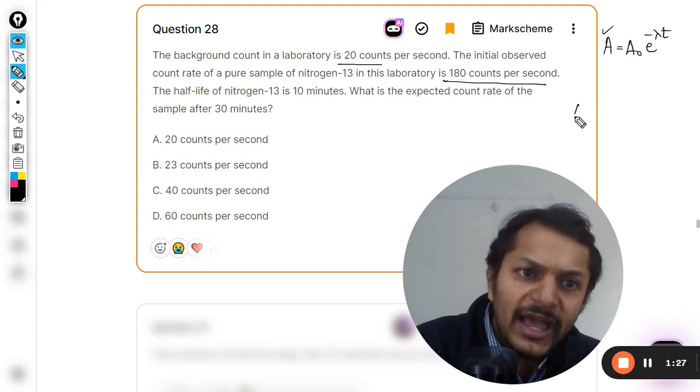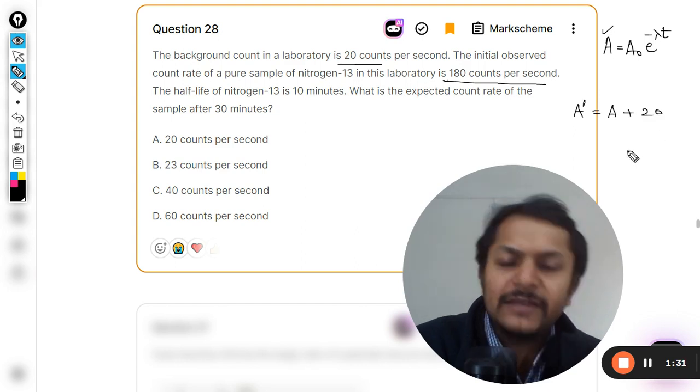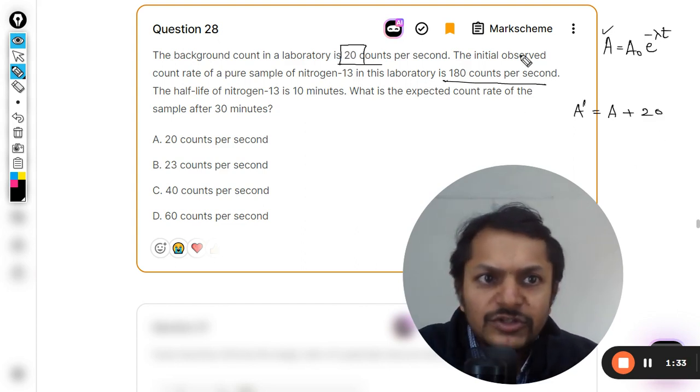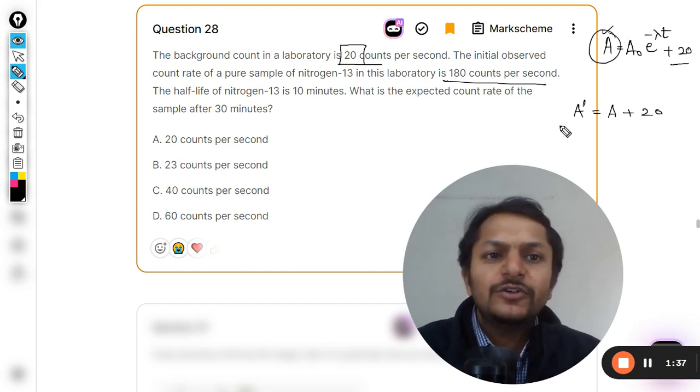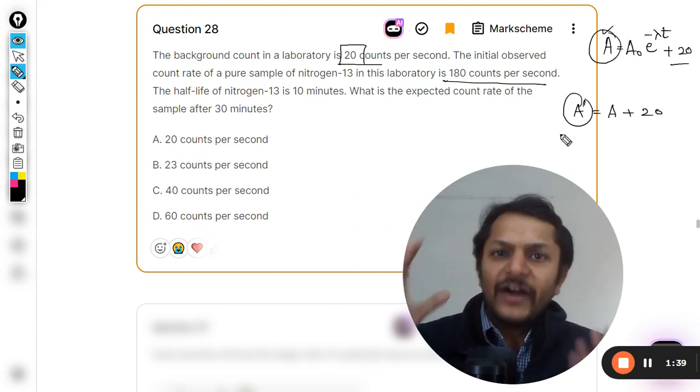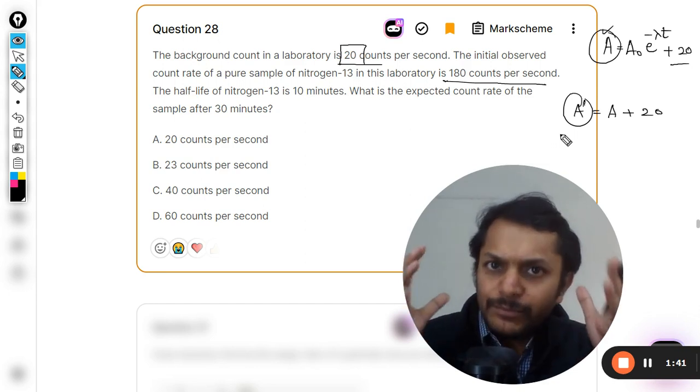But there is a background radiation also, so it will be actually measuring the wrong count rate. The measurement goes somewhat like this: A plus 20. This 20 background is actually added here, so this is the value that you are finding on the measuring device.